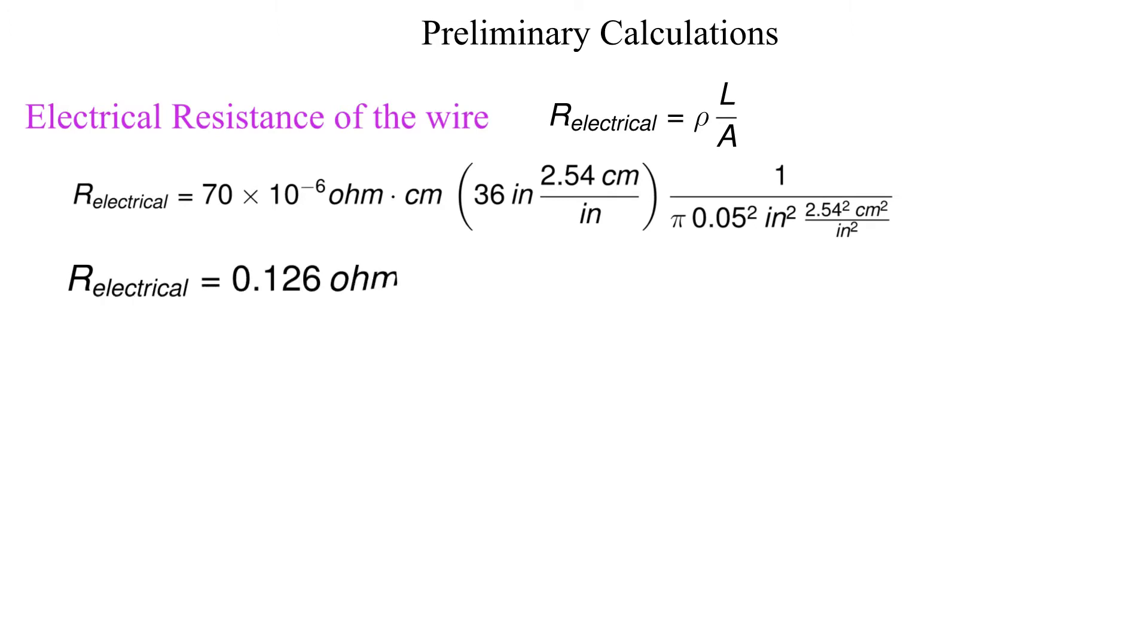First let's calculate the electrical resistance of the wire from the resistivity, length, and cross-sectional area. The electrical resistance is 0.126 ohms.